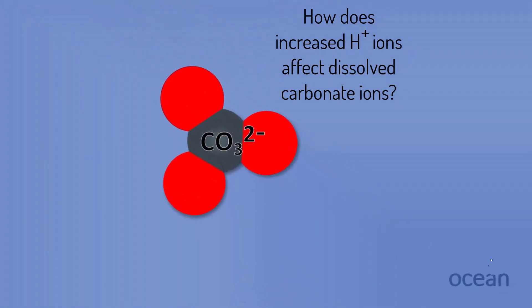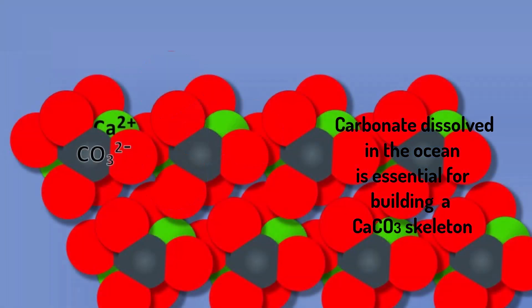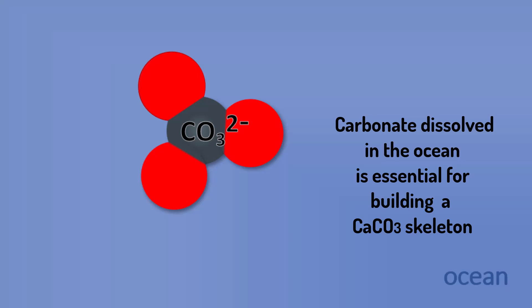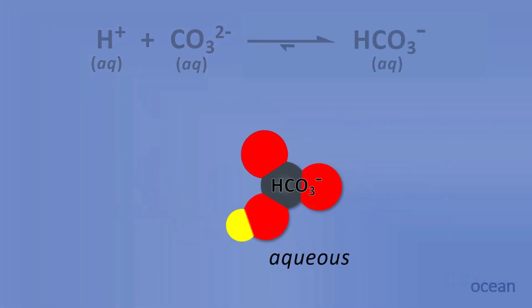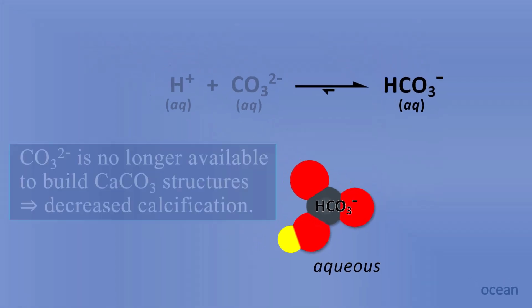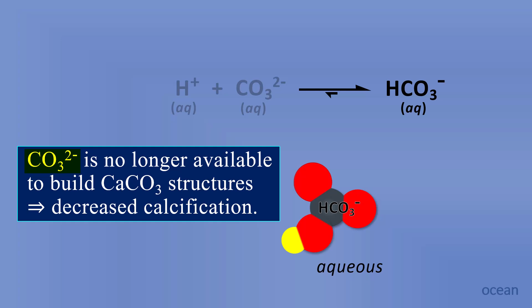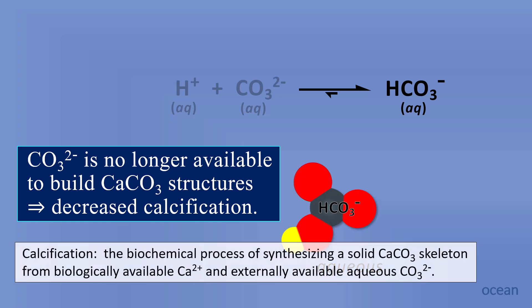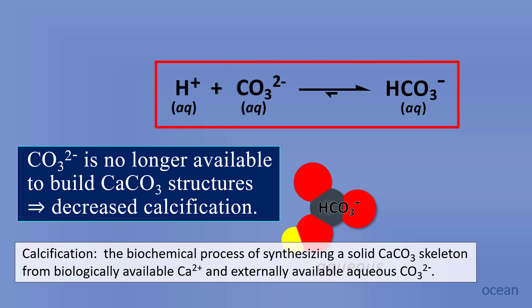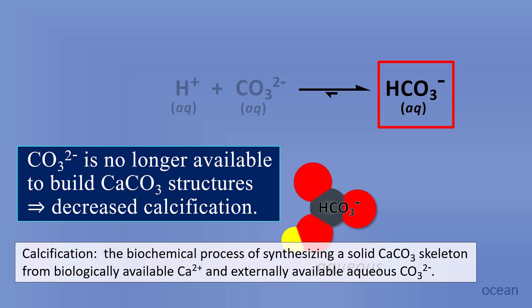Carbonate is essential for sea creatures to build calcium carbonate skeletons — any dissolved carbonate CO₃²⁻ in ocean water is available for organisms to create their skeletal structures. But if the carbonate ion encounters a hydrogen ion, the result is hydrogen carbonate. Carbonate CO₃²⁻ is no longer available to build calcium carbonate structures — in other words, there is a decrease in calcification. Calcification is the biochemical process of synthesizing a solid calcium carbonate skeleton from biologically available calcium ions and externally available aqueous carbonate ions. If carbonate is converted to hydrogen carbonate, it is not usable to create a skeleton, resulting in decreased calcification.